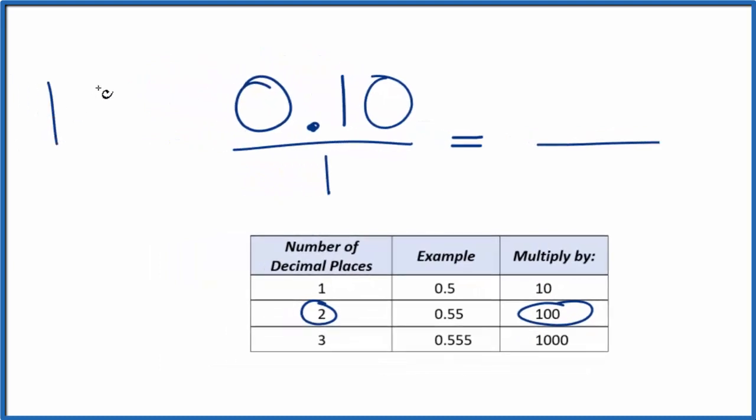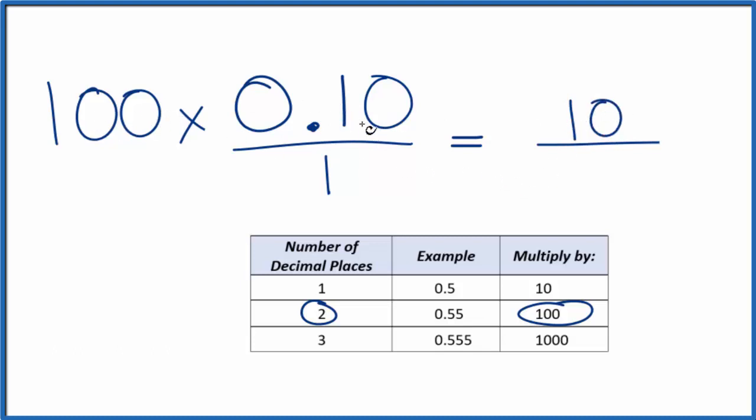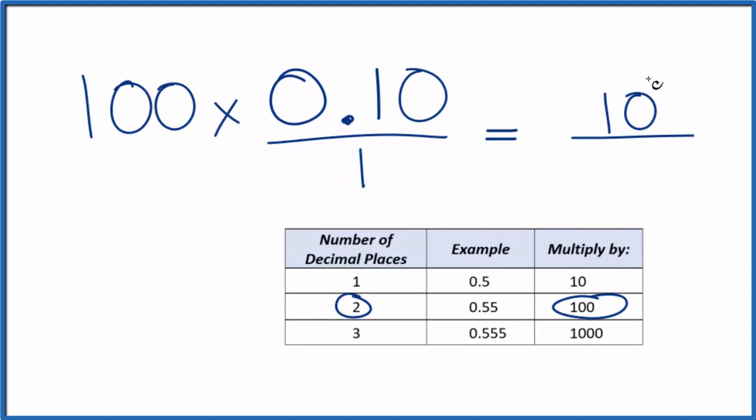So we could put 100 here and multiply that by 0.10. That would give us 10. So that's a whole number, but we can't just multiply the top because that would give us different values on either side.